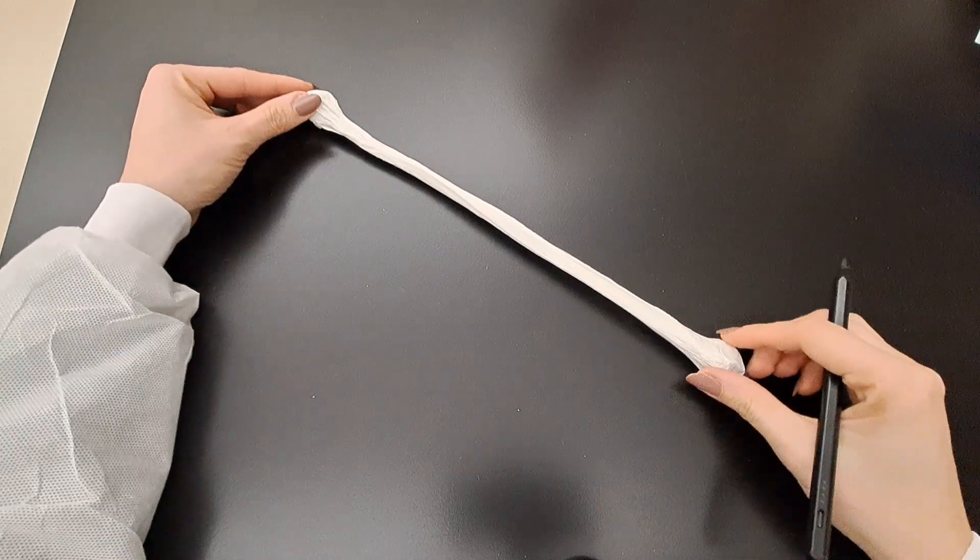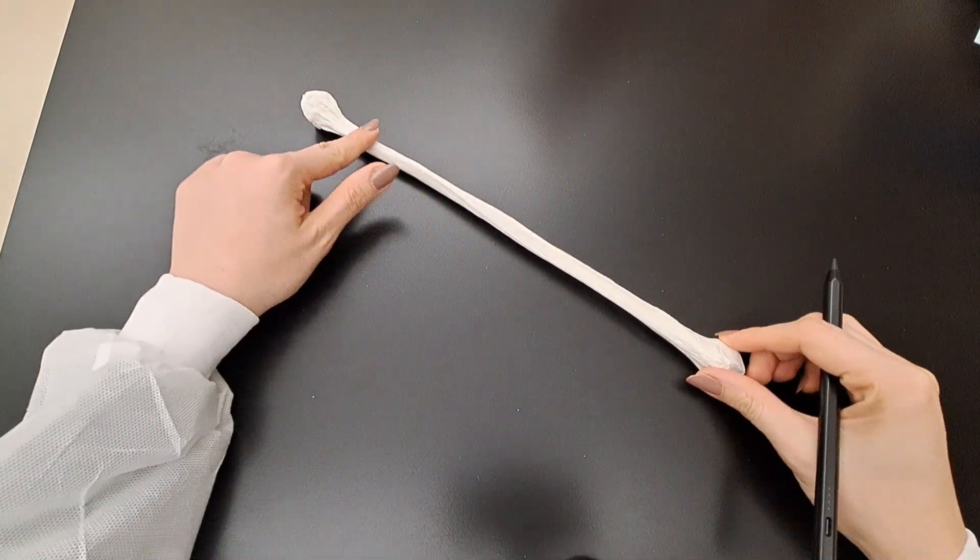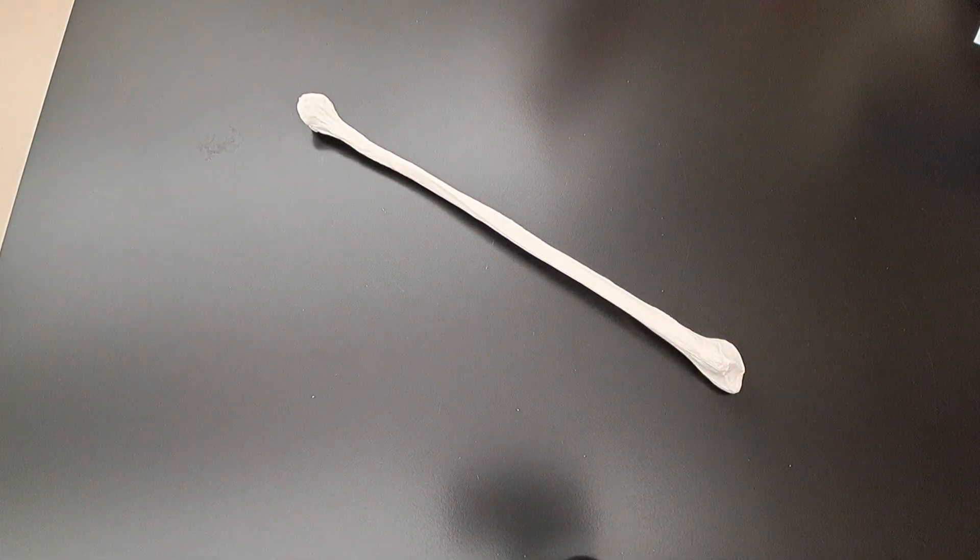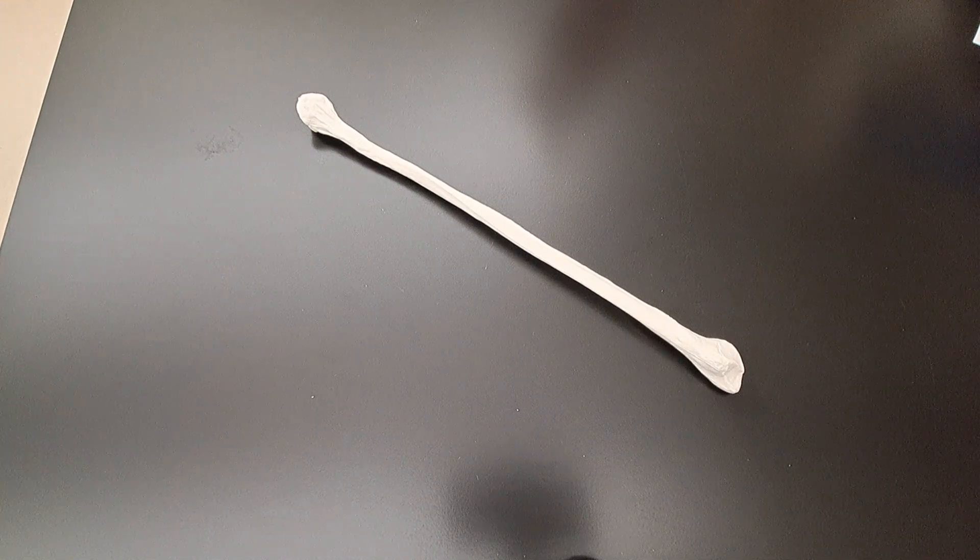The fibula has two ends and a shaft. When it comes to the fibula, it is very important to differentiate between the two ends.